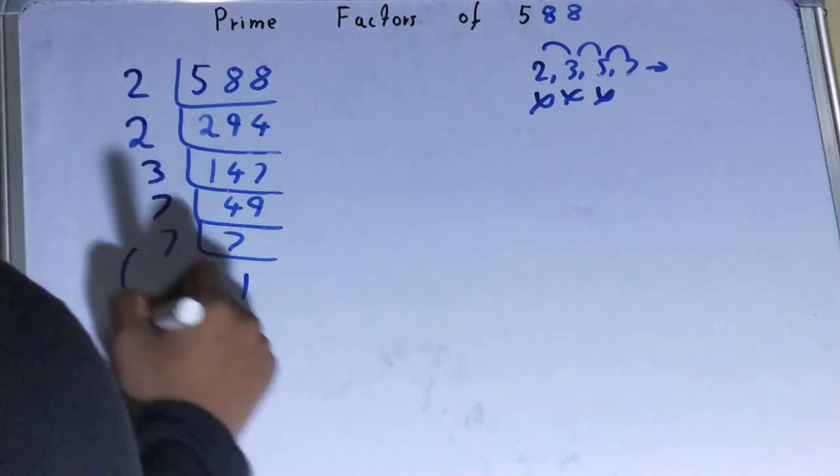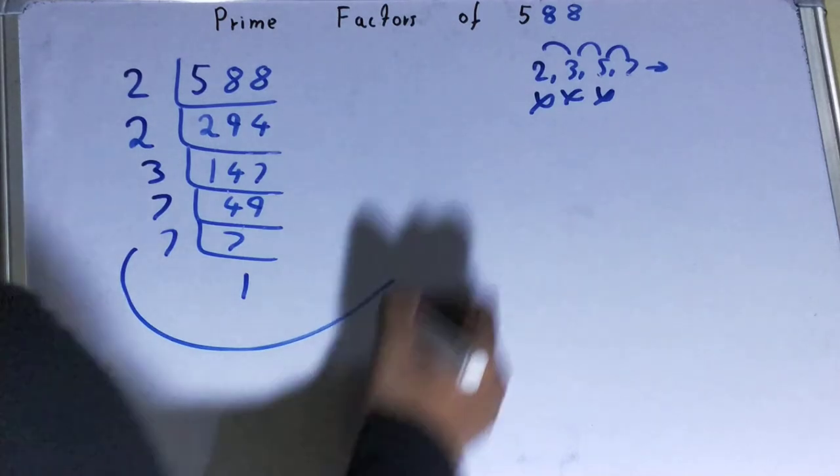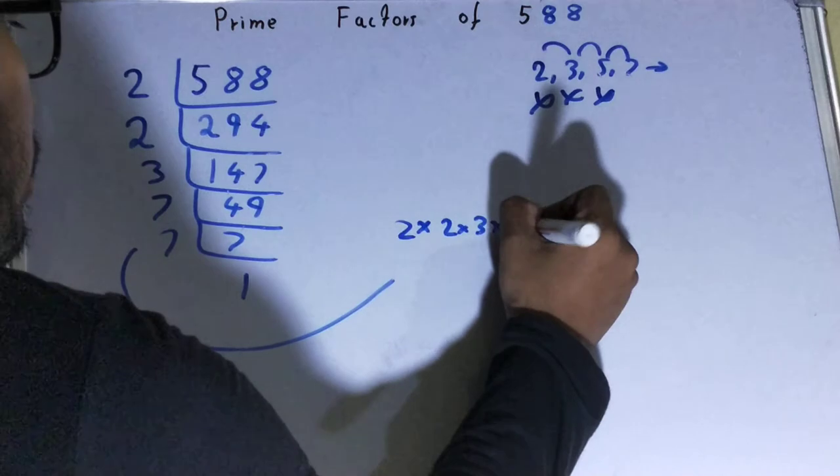Once you're left with 1, the work is done. And whatever you have on the left hand side will be the prime factors of the number 588. That is 2 × 2 × 3 × 7 × 7.